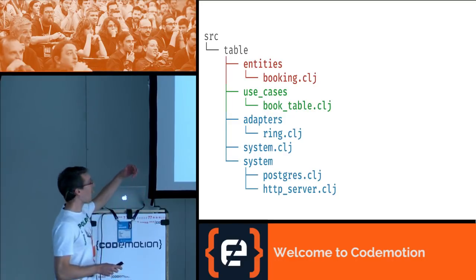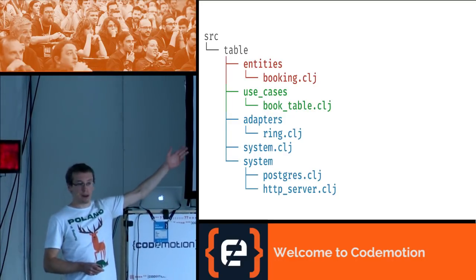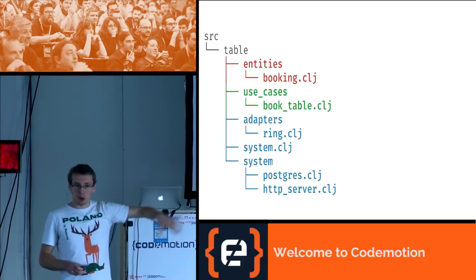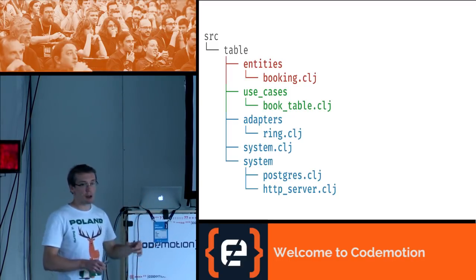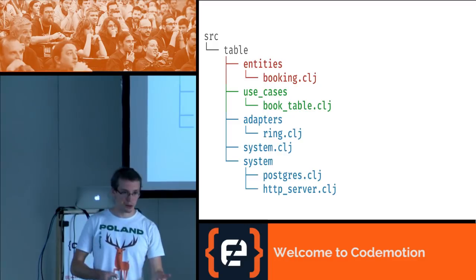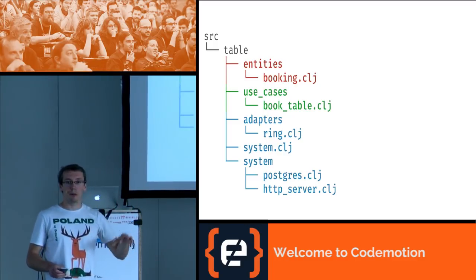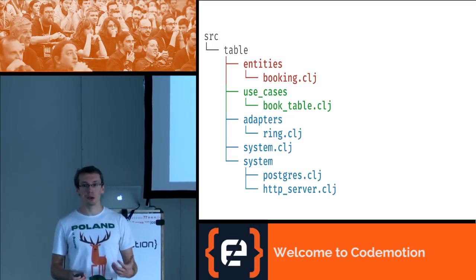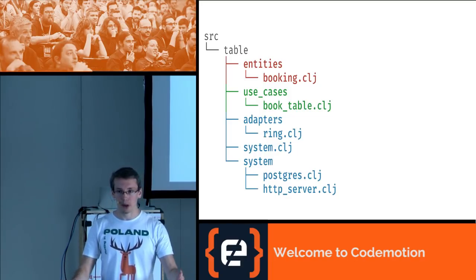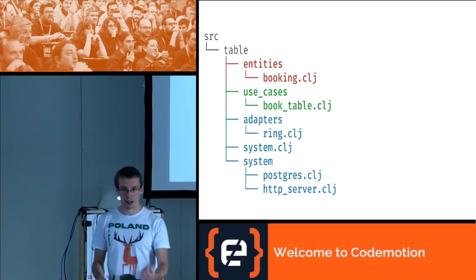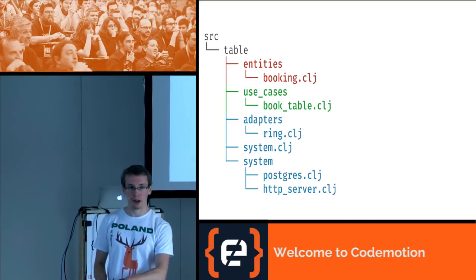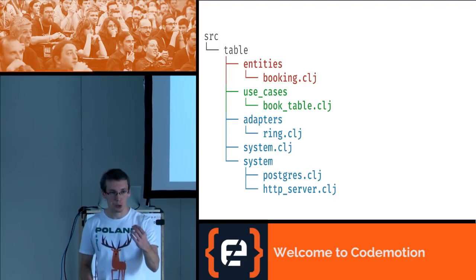So far we've got a representation of our business object, a use case with that business object, an adapter translating it into the world of Ring, and then a system of moving things — because everything above was purely functional, immutable, and very easily testable. Below we have dependency injection: how we introduce living, moving pieces into the application. And all the code you've seen does it explicitly, without any framework magic — I'm explicitly saying what I need where. I like this explicitness because it allows me to reason about my code.